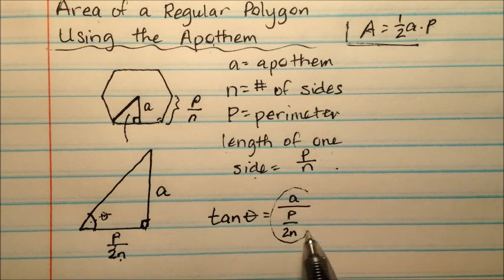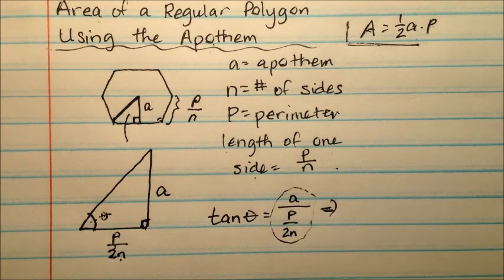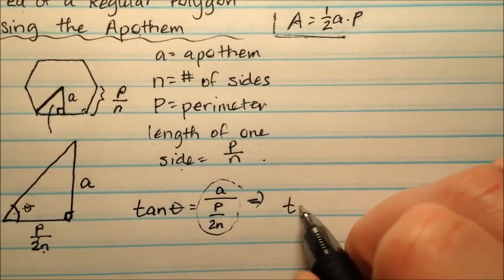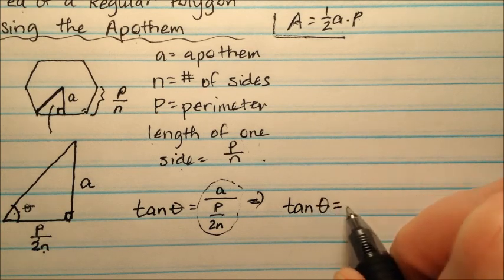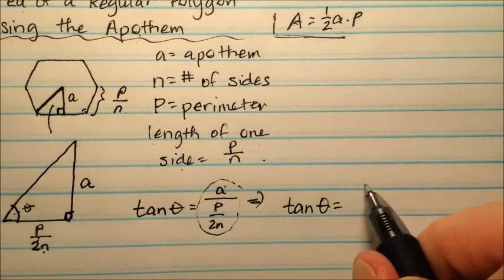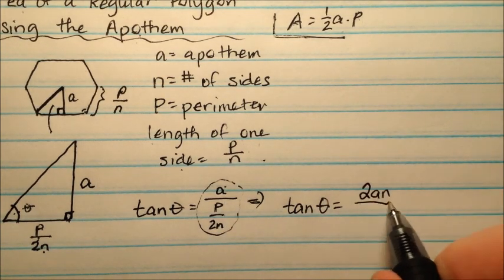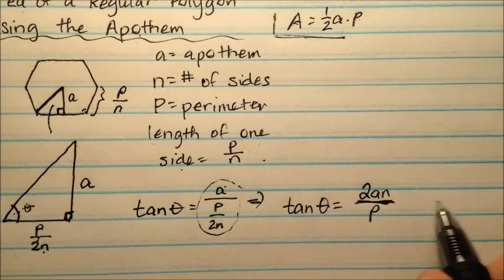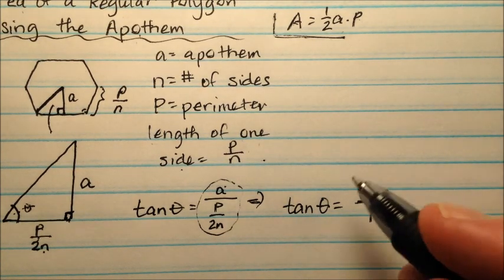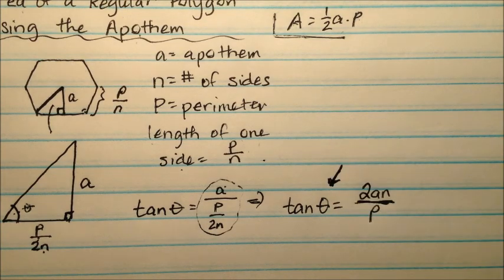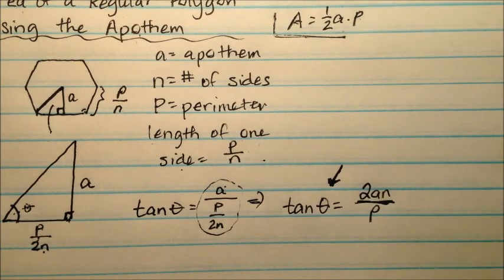But we don't really like having this complex fraction. So I'm going to change it. I'm going to bring it over here and say the tangent of theta equals, when I bring that up, it'll be 2AN over P. We're going to talk about this angle theta here in a little bit. But let's finish up what we're doing with this formula.